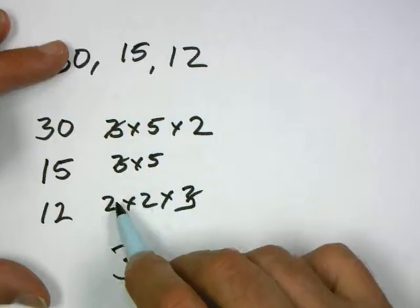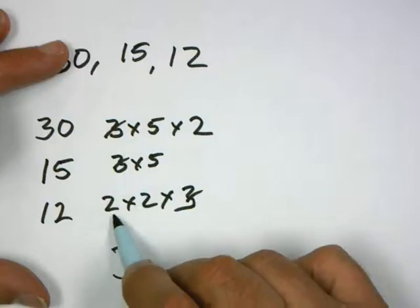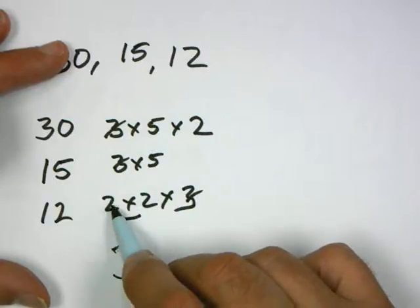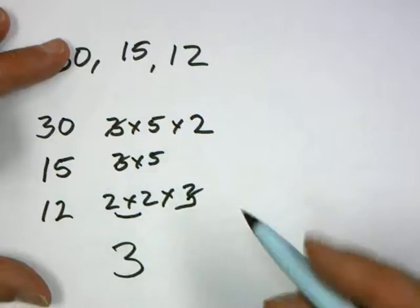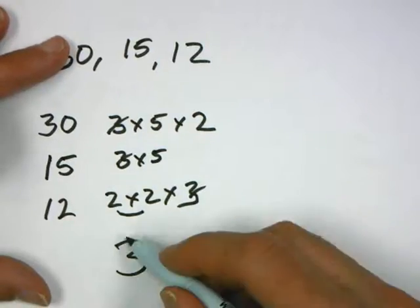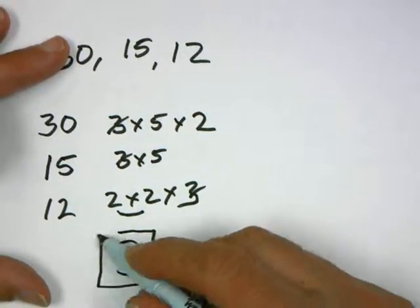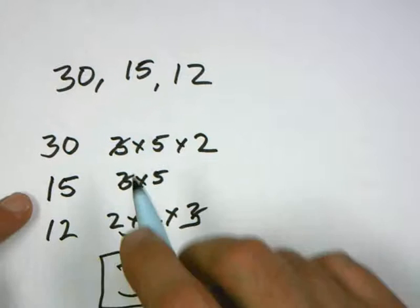There's 2 I can't use. I can't pair these two together. They have to be from different numbers. And if I'm not multiplying by anything, this is going to be my greatest common divisor. The greatest common divisor between 30, 15, and 12 is 3.